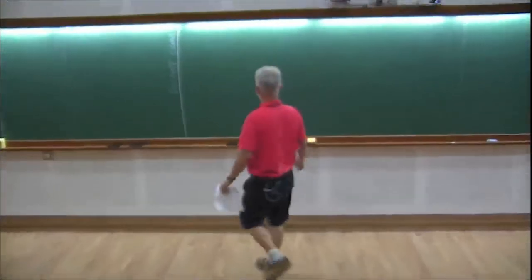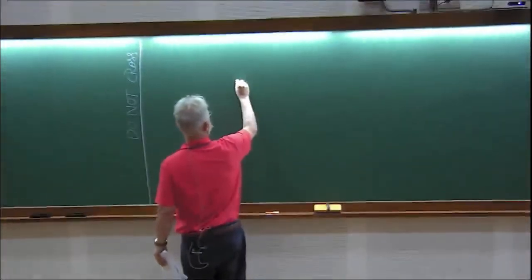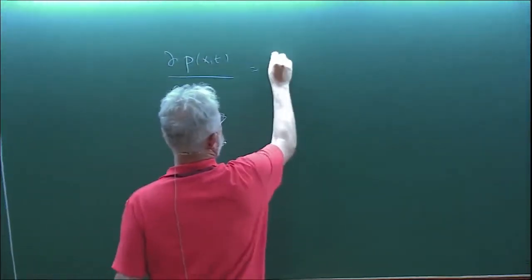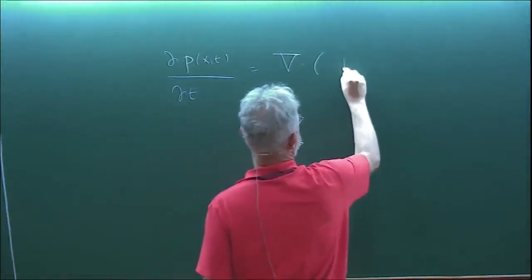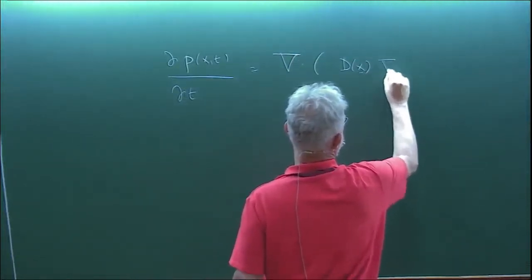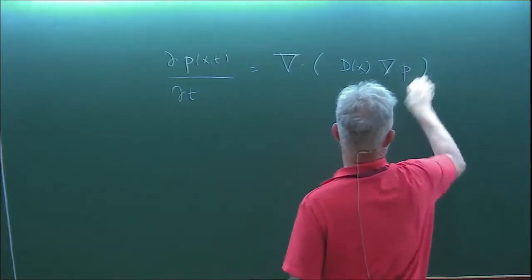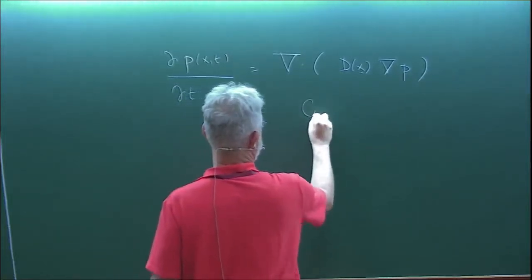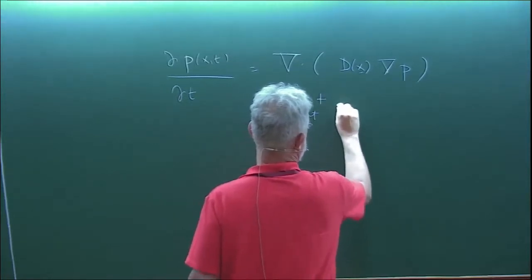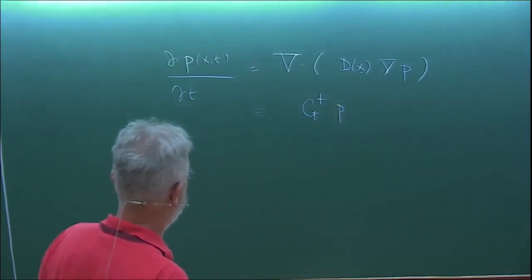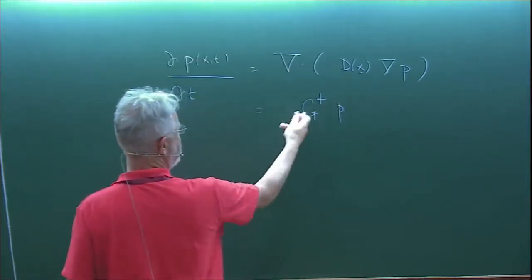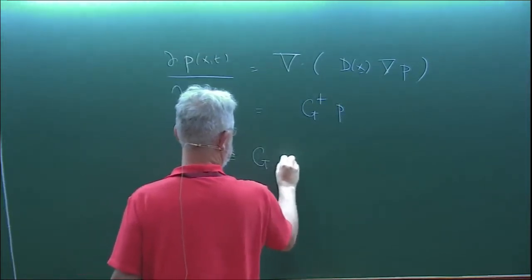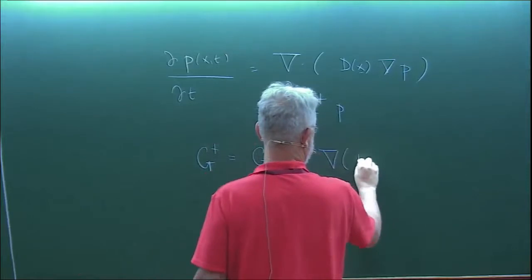Yesterday we wrote down what looks like the traditional diffusion equation from the physics literature, but with some spatial dependence of the diffusion constant. We know that this defines g-dagger, the adjoint of the generator. If you work it out, you can see that g-dagger is equal to g — you find exactly the same operator back.